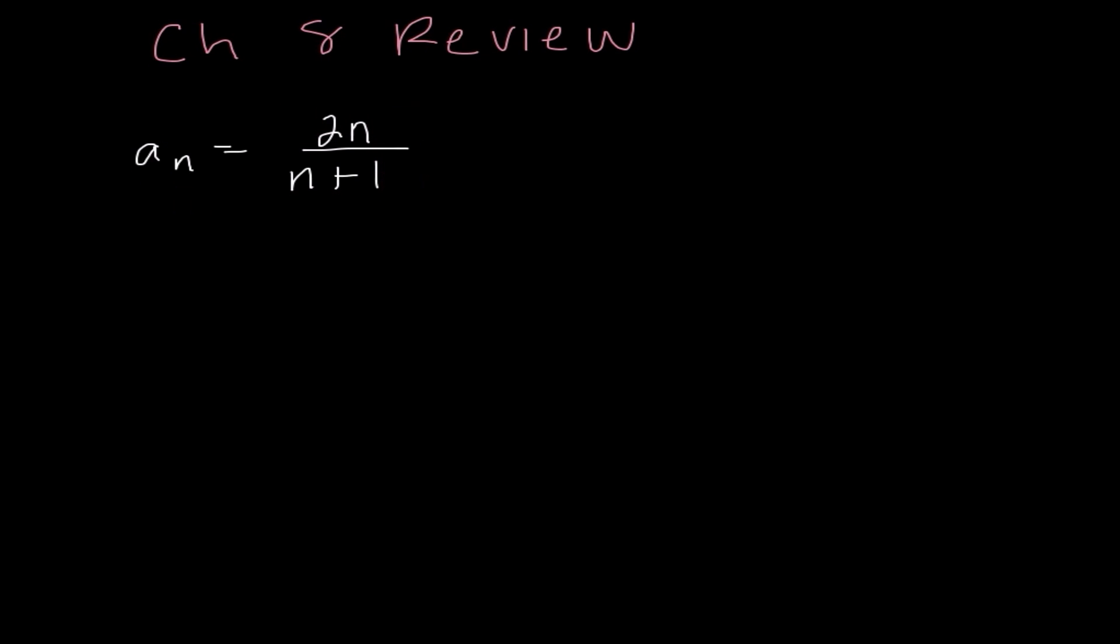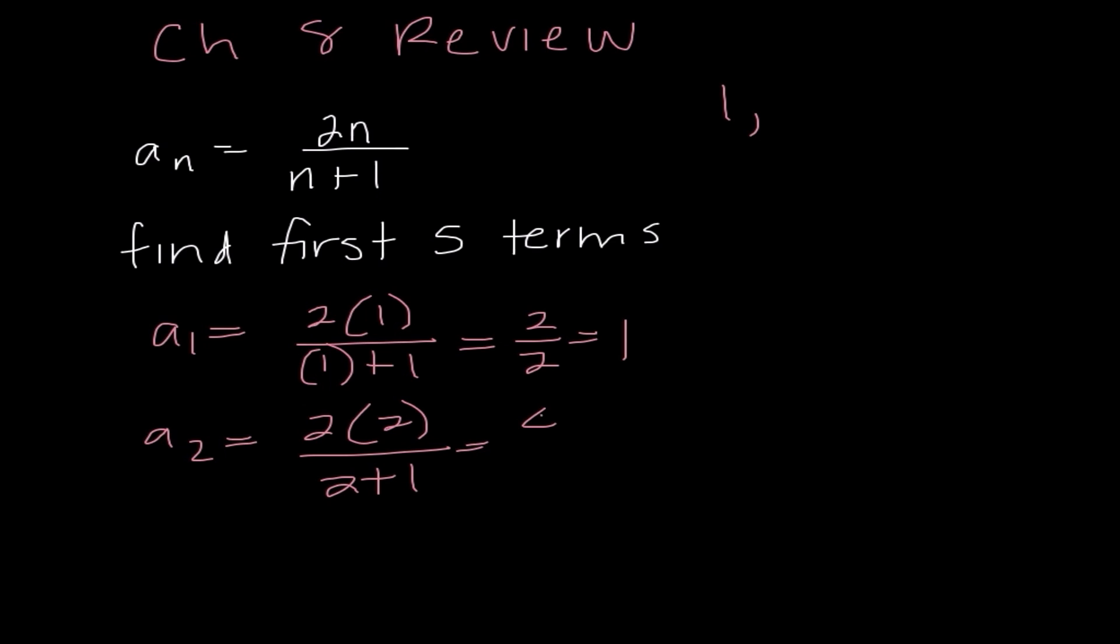I'm going to start with just a few general sequences where it's giving us the equation, but it does not specify if it is arithmetic or geometric. So if it asks us to find the first five terms, I'm simply going to substitute in for n. If I'm finding a sub 1, I'm doing 2 times 1 over 1 plus 1. 2 over 2 is 1, so I know my first value is 1. For a sub 2, that means I'm substituting 2 in for n, so I would get 4 over 3.